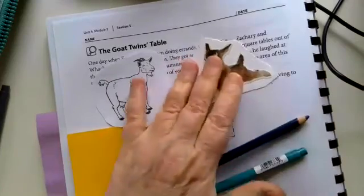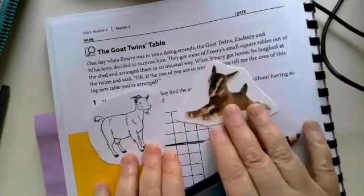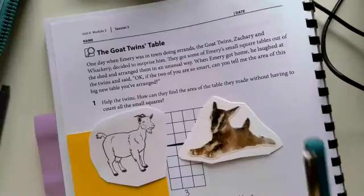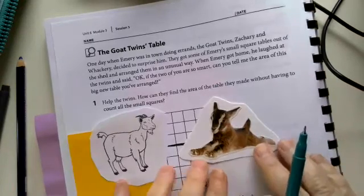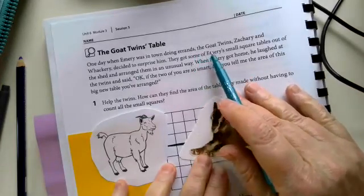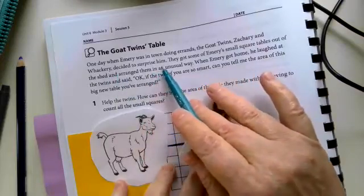So this page is all about the goat twins table. I have the goat twins right here. And the story says, I'm going to get ready to underline important parts of the direction, so help me out here. One day, when Emery was in town doing errands, the goat twins, Zachary and Wackery, decided to surprise him.